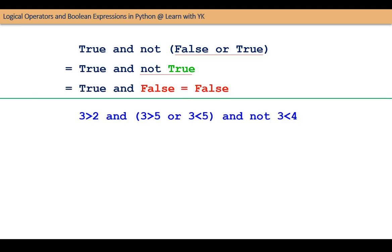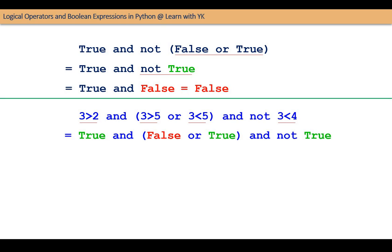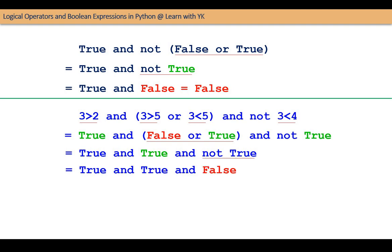Let us see this expression now. It involves relational operators also. Relational and arithmetic operators have higher priority than the logical operators. Therefore, in this expression, all the relational operators will be evaluated first, and the expression becomes TRUE AND FALSE OR TRUE AND NOT TRUE. Then the expression within the parenthesis will be evaluated, and then the expression will become TRUE AND TRUE AND NOT TRUE. Then NOT will be evaluated, and the expression will become TRUE AND TRUE AND FALSE, which finally evaluates to FALSE.